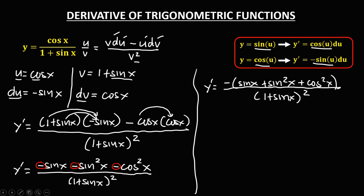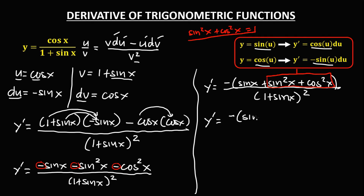Applying the Pythagorean identity: sine squared x plus cosine squared x equals 1. Therefore the numerator becomes negative times sine x plus 1, which equals negative times 1 plus sine x, all over 1 plus sine x, to the power 2.